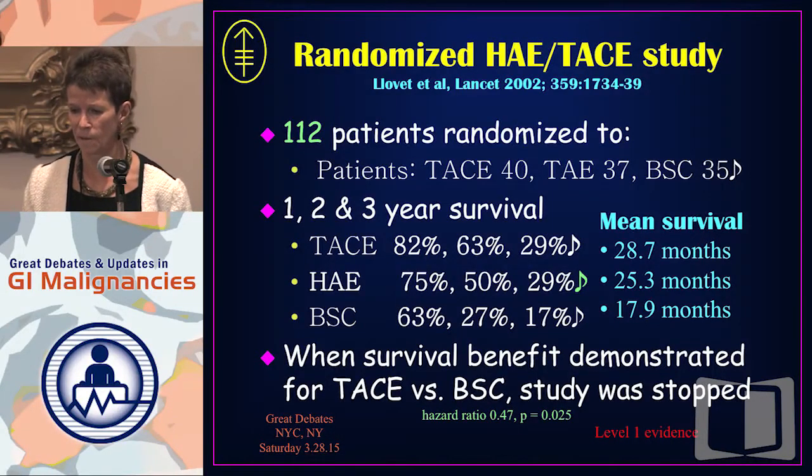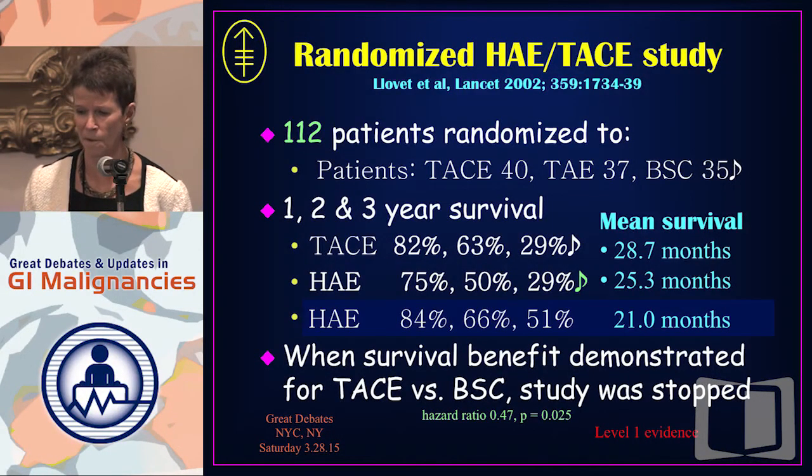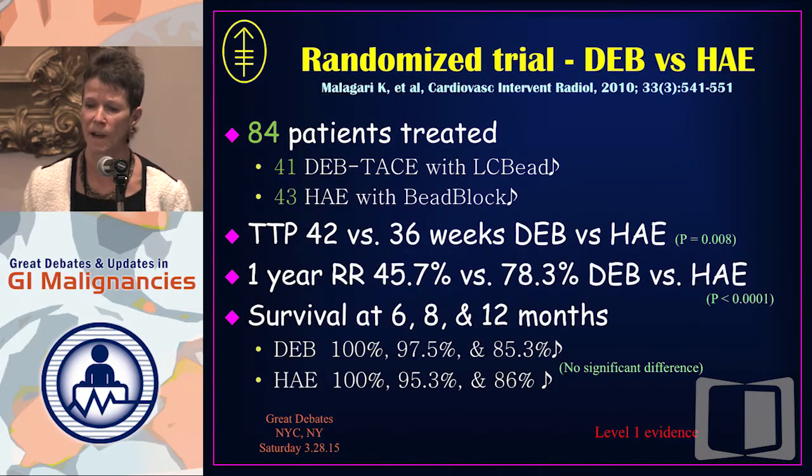This is our data on bland embolization — a retrospective group of patients reported in 2008. One-, two-, and three-year survivals were 66%, 46%, and 33%. But if you take out the patients with portal vein involvement or extrahepatic disease — making them comparable to the Lovett and Lowe groups — survival becomes 84%, 66%, and 51%. Those Lovett results and our results don't look that much different, although it's not a randomized trial.